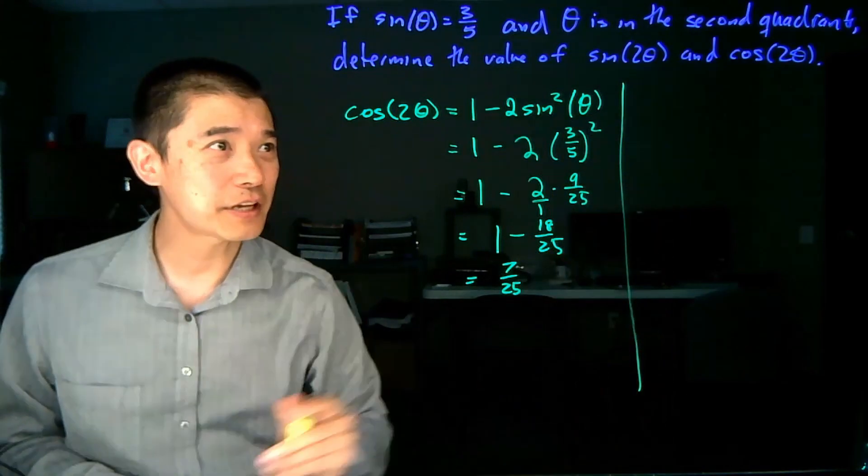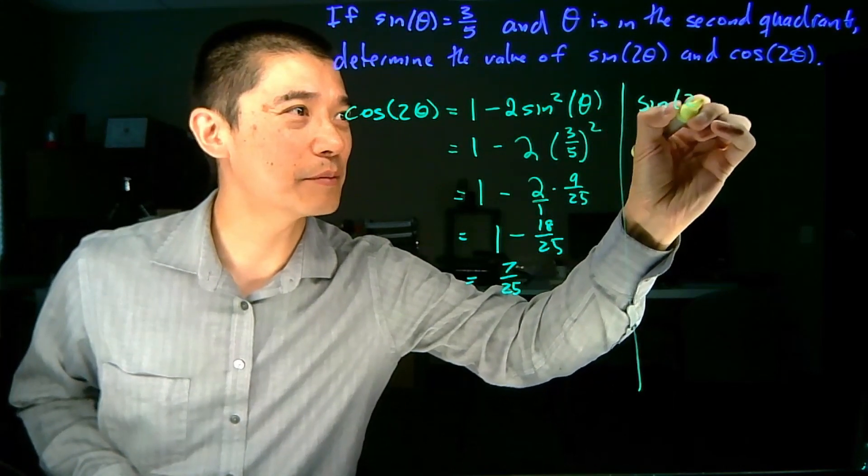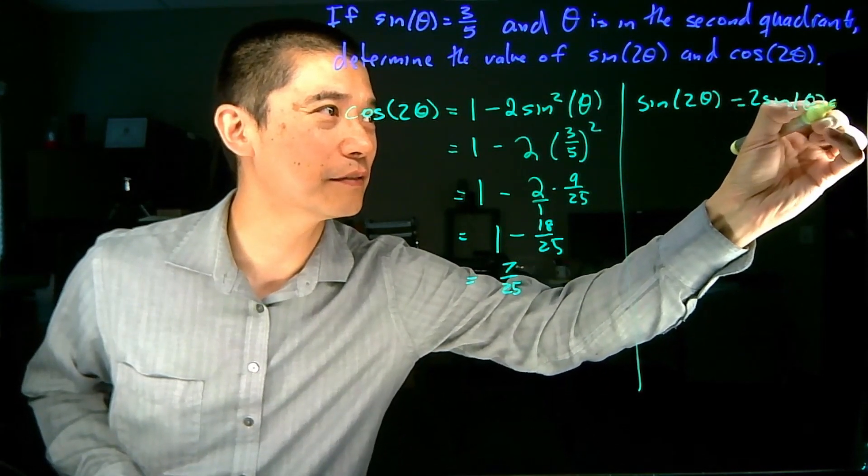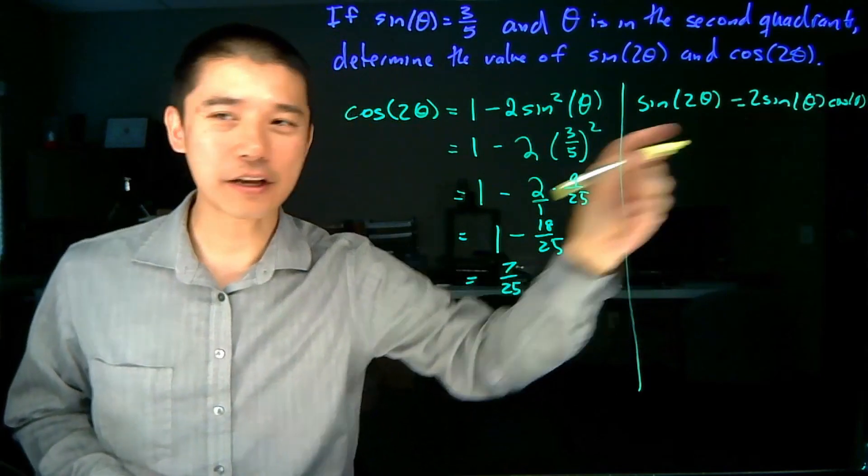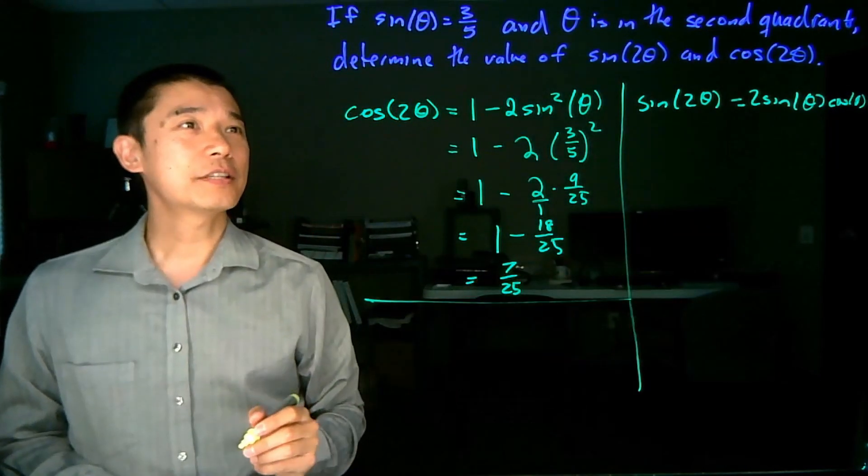Now to get the value of sine of 2 theta, we actually need to know what the value of cosine theta is. Because the formula is sine of 2 theta is 2 sine theta cosine theta. And that cosine theta value is one that we currently don't have.